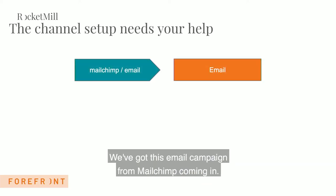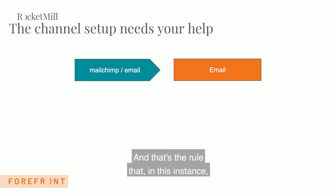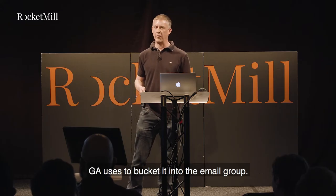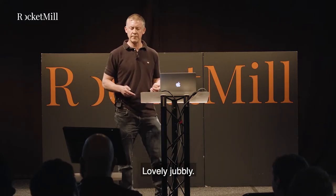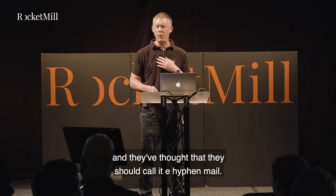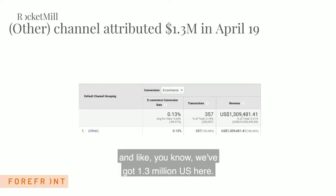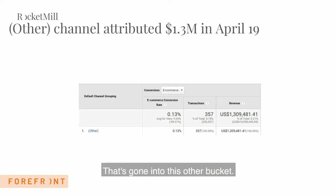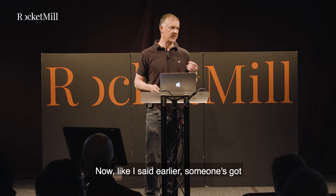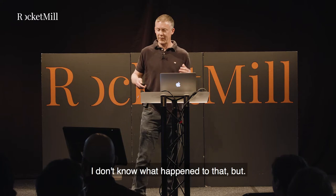Let's look at another example. We've got an email campaign from MailChimp coming in — it's got an 'email' medium, which is the rule GA uses to bucket it into the email channel. But hang on — someone's done custom campaign tagging and called it 'e-mail' with a hyphen. Where does that go? Into the 'other' channel. I found this in real data — 1.3 million dollars had been going into the 'other' bucket. Someone had budget for the 'other' channel and didn't even know it.